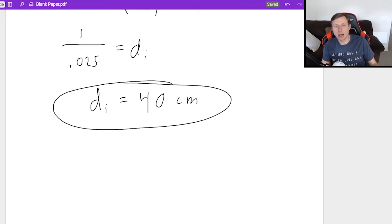So there is my image distance. The fact that it's positive means it's on the same side as the object. In other words, if I got a negative, it would be on the opposite side as the object. 40 centimeters right there.